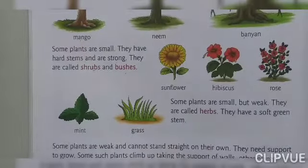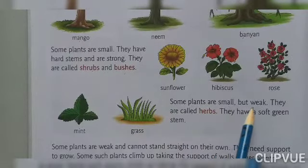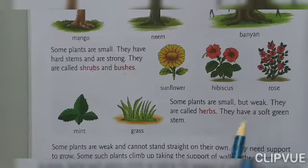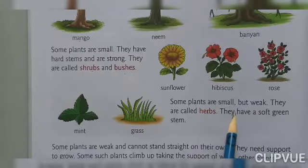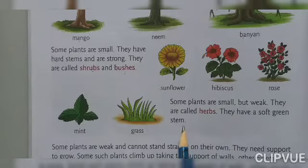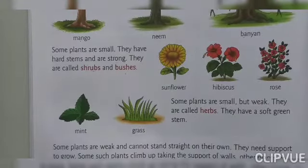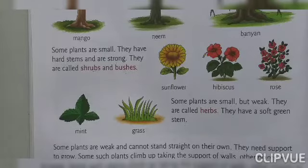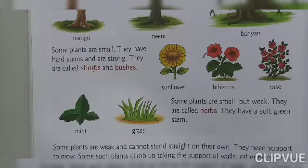Some plants are small but weak. They are called herbs. They have a soft green stem. You can observe grass — you have all seen it. They have a soft stem and are very weak. These are called herbs.